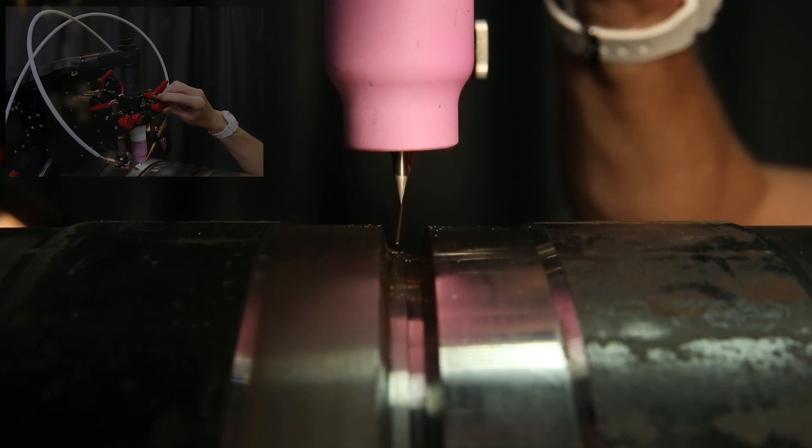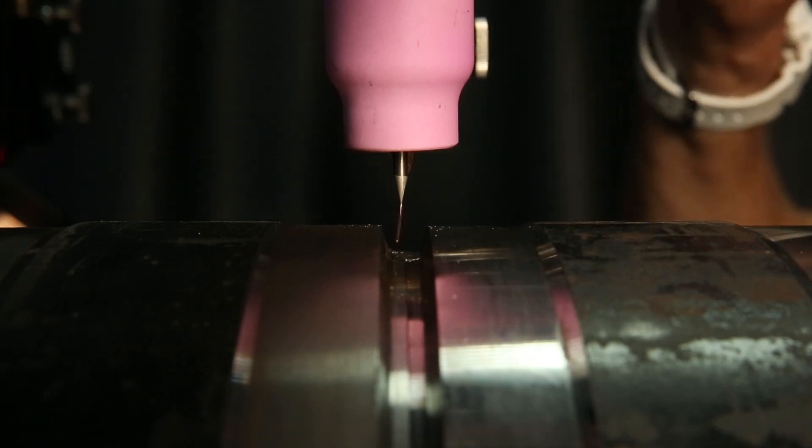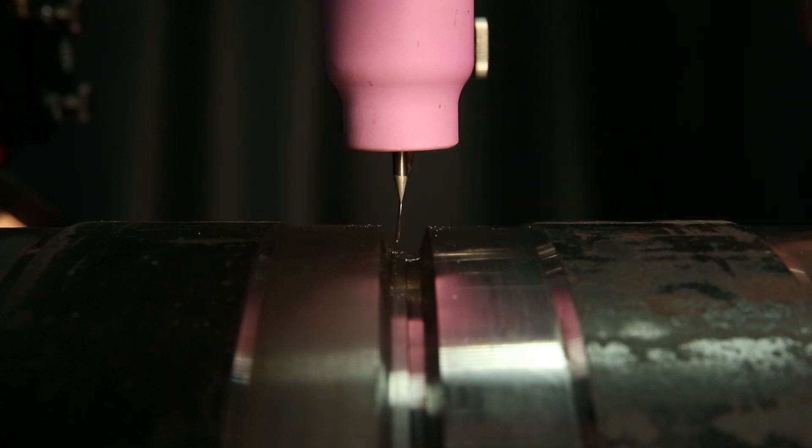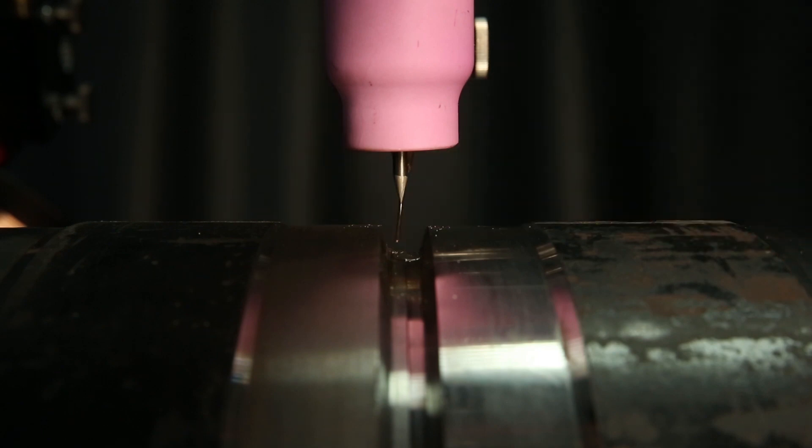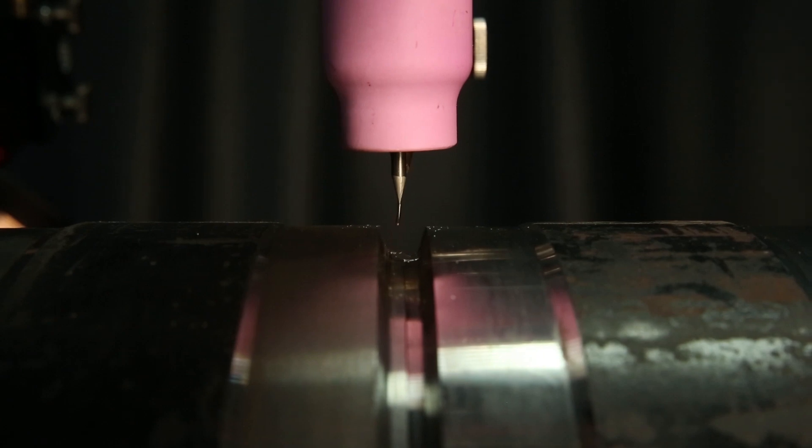I will set my gap, my tungsten to wire gap, about one-eighth or three millimeters so the wire doesn't hit the tungsten when I start to weld. Then I'll feed the wire back in and I'm ready to weld.